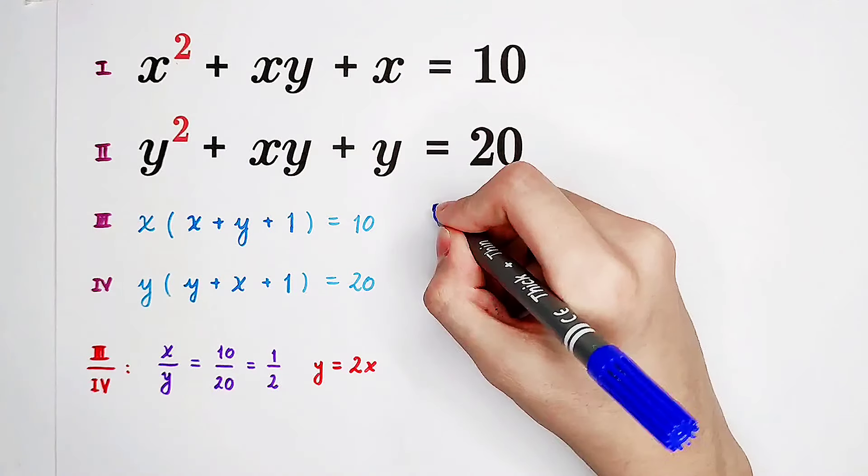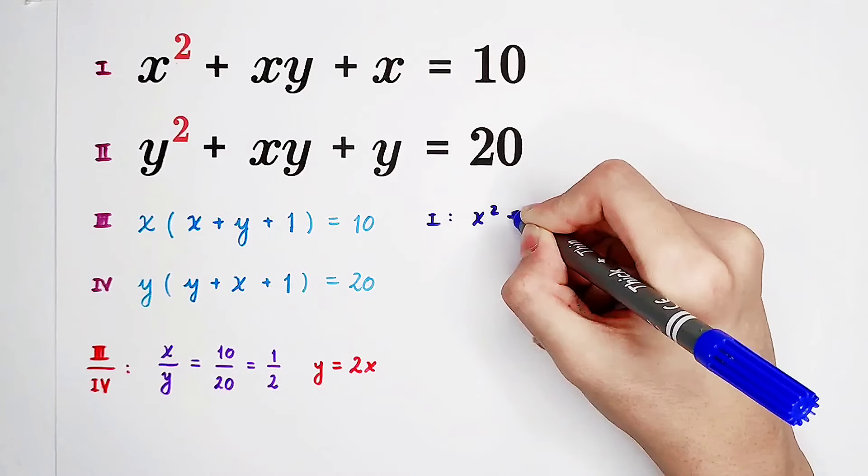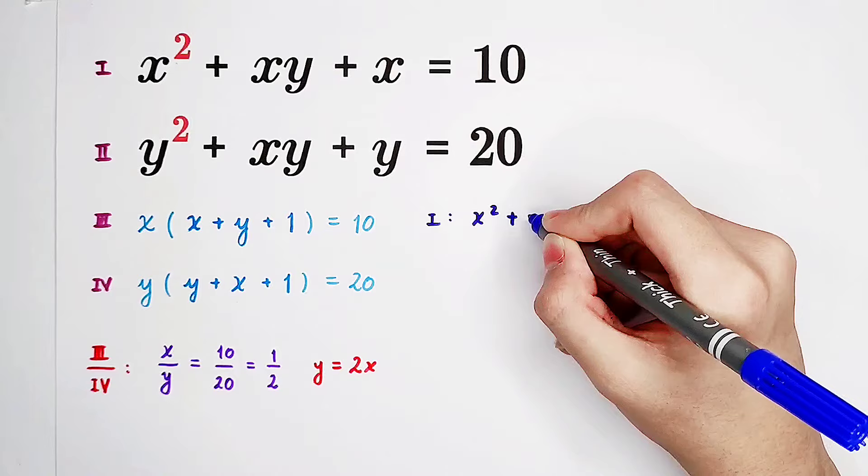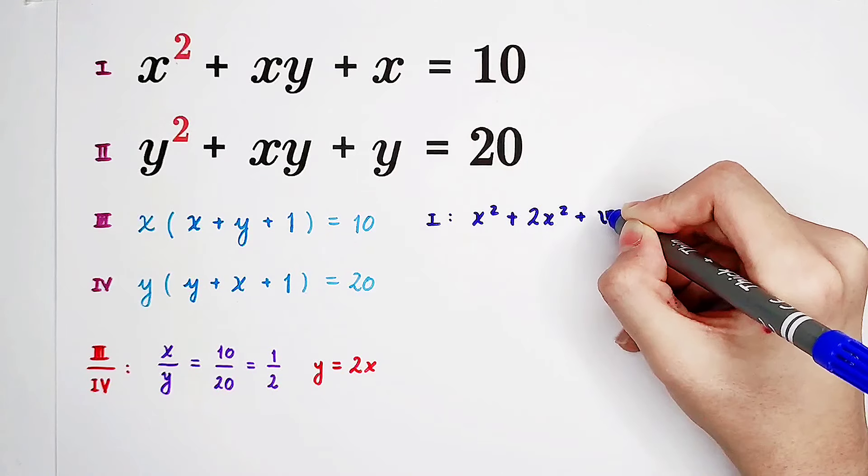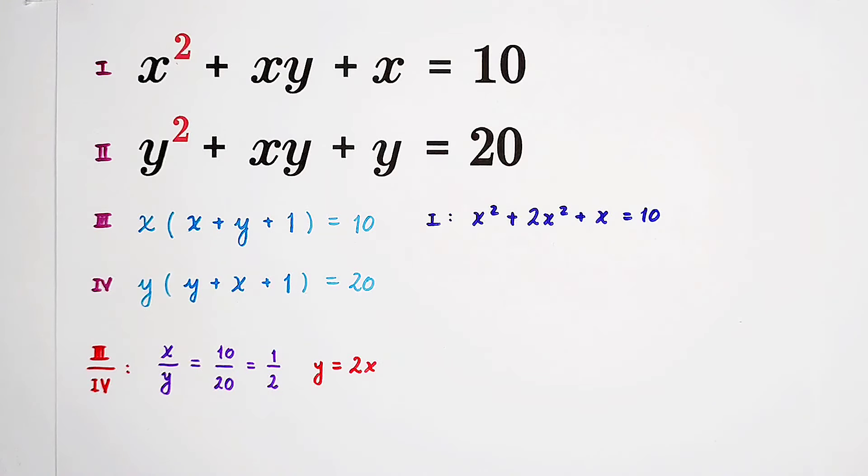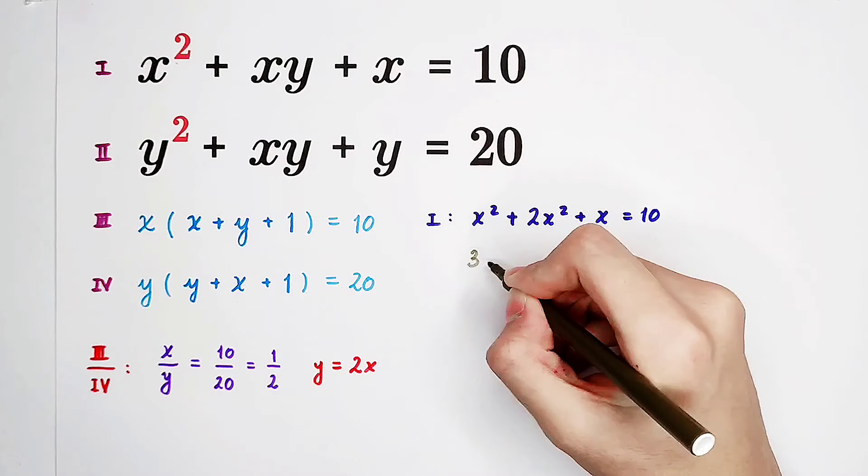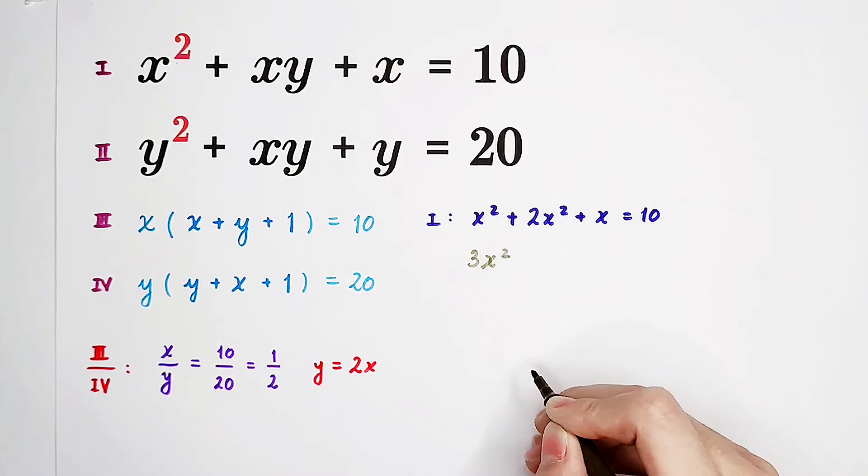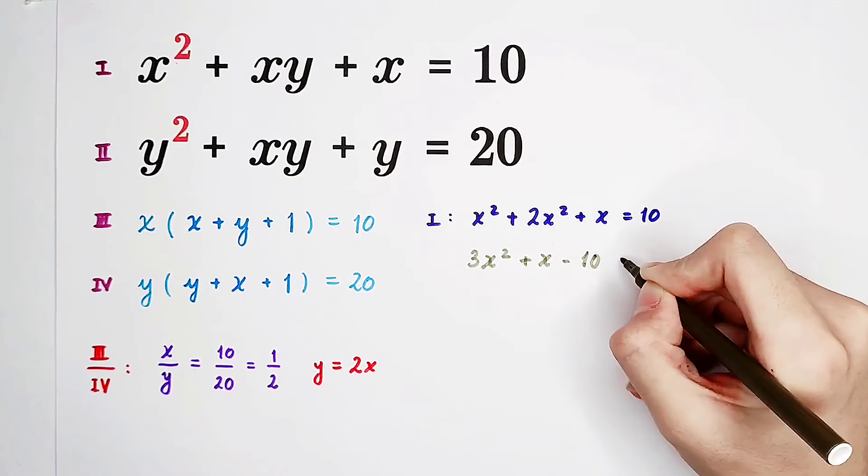The first equation will actually be x squared plus x times 2x, which is 2x squared, plus x equals 10. This quadratic equation in x is 3x squared plus x minus 10 equals 0.